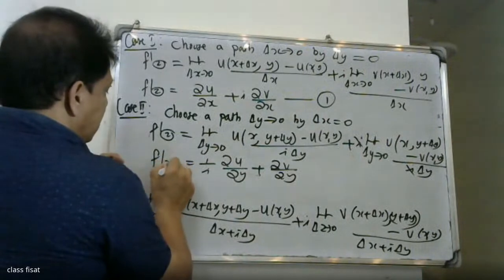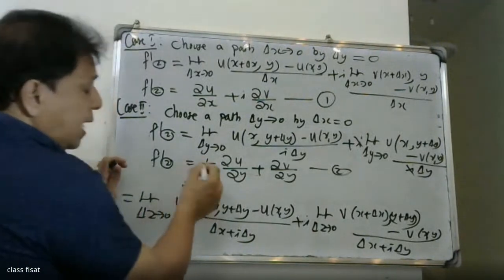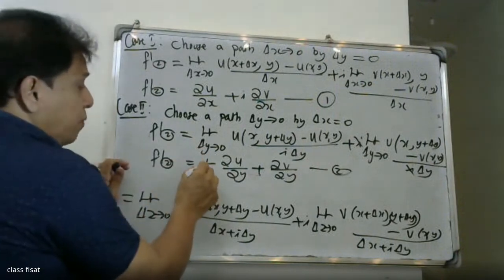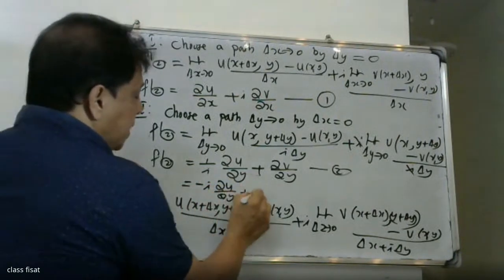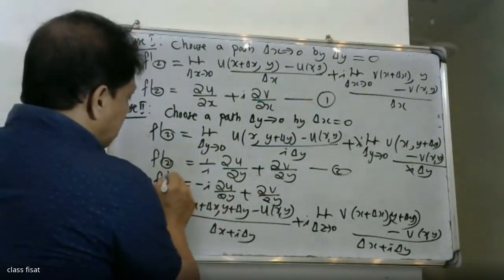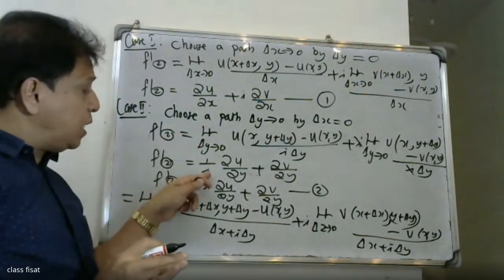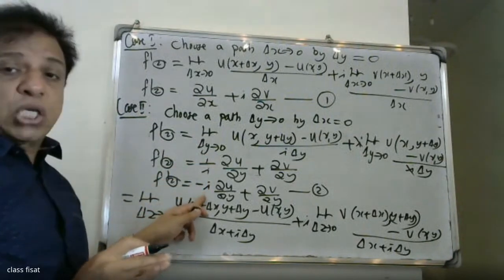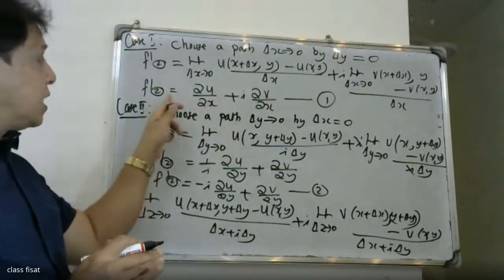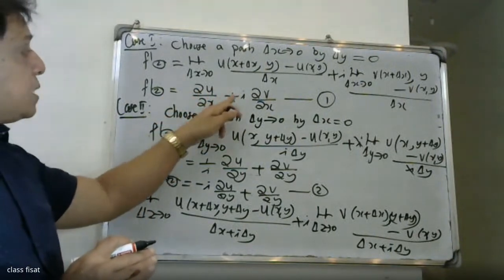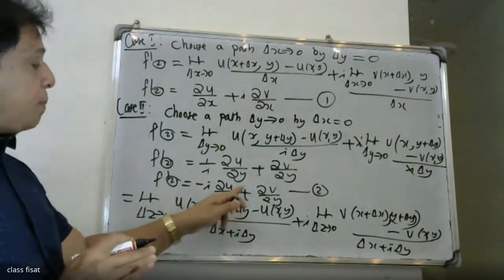So from case two, f'(z) equals 1/i times ∂u/∂y plus ∂v/∂y, which equals minus i·∂u/∂y plus ∂v/∂y. That gives f'(z) = minus i into ∂u/∂y plus ∂v/∂y.